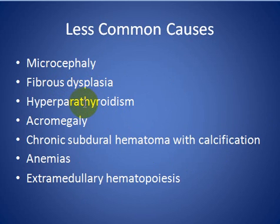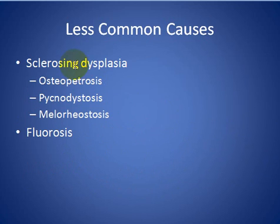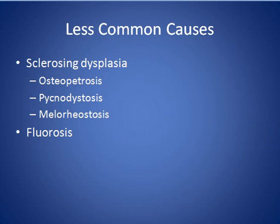Less common causes include fibrous dysplasia, hyperparathyroidism, acromegaly, chronic subdural hematoma with calcification, chronic anemias like sickle cell anemia, thalassemia, and iron deficiency anemia, as well as extramedullary hematopoiesis and sclerosing dysplasias like osteopetrosis, pycnodysostosis, melorheostosis, and diploic expansion. Let us see some examples of these causes.